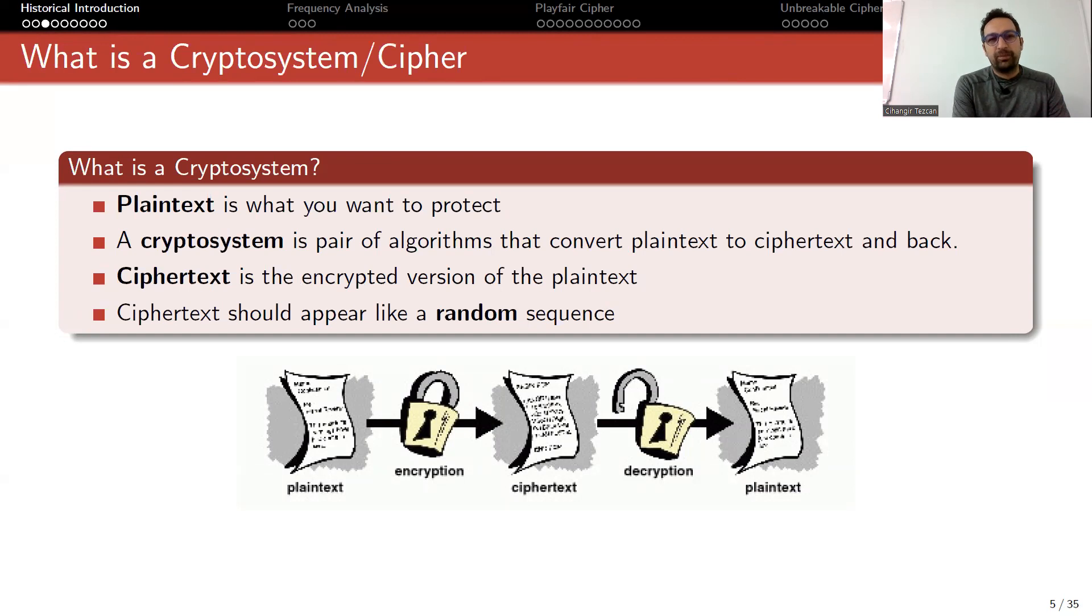Let me start with the word cipher and crypto system to see how we do encryption. A crypto system or cipher consists of two algorithms: encryption and decryption. Plaintext is what you want to protect - your plaintext can be an SMS message, a WhatsApp message, a file on your computer, or even your voice while calling your friends. A crypto system is a pair of algorithms that convert plaintext to ciphertext and back.